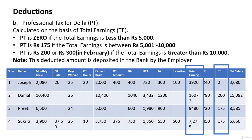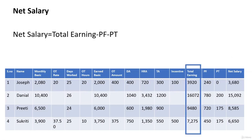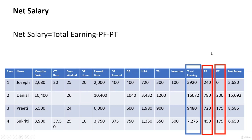Professional tax is ₹175 if total earnings are between ₹5,001 and ₹10,000 — as in the case of Priti and Sukriti. It is ₹200 or ₹300 if total earnings are greater than ₹10,000. This professional tax deducted by the employer is deposited in the bank. Net salary = total earnings minus provident fund minus professional tax.